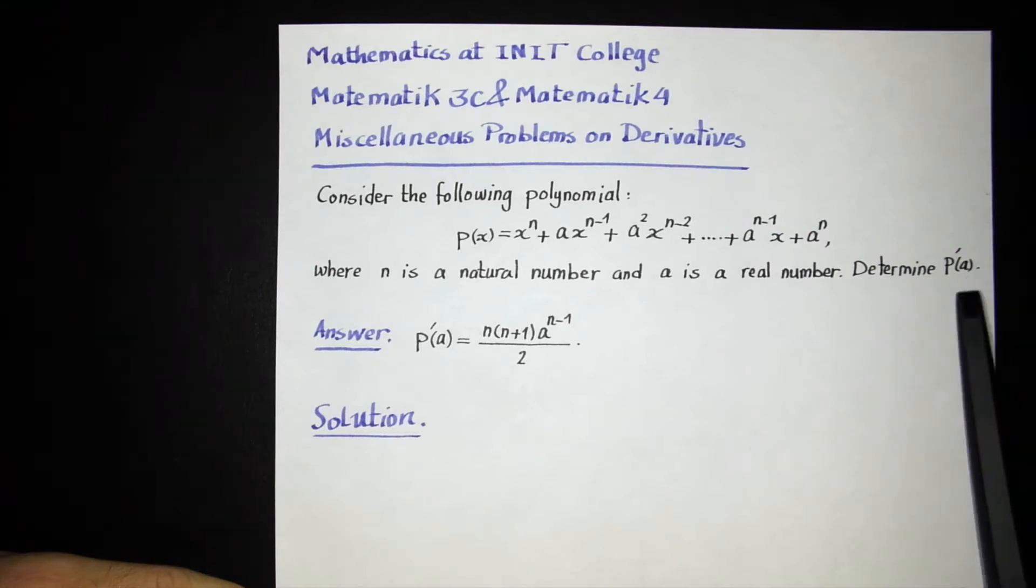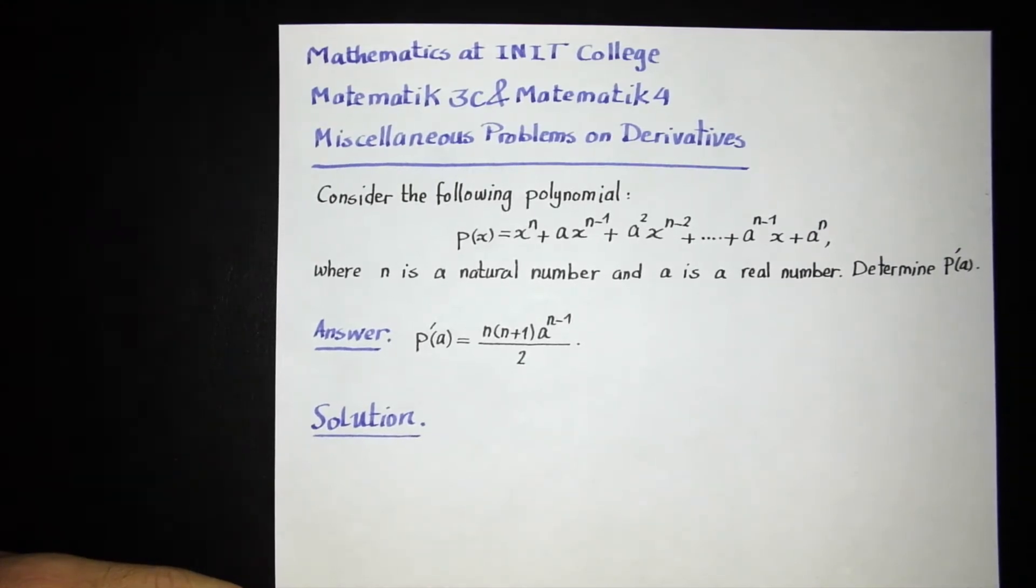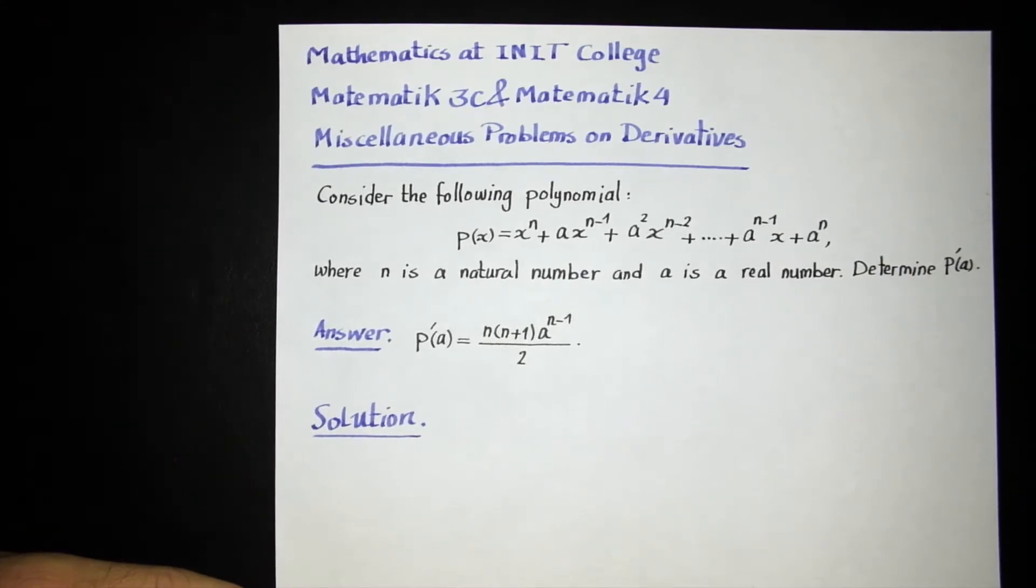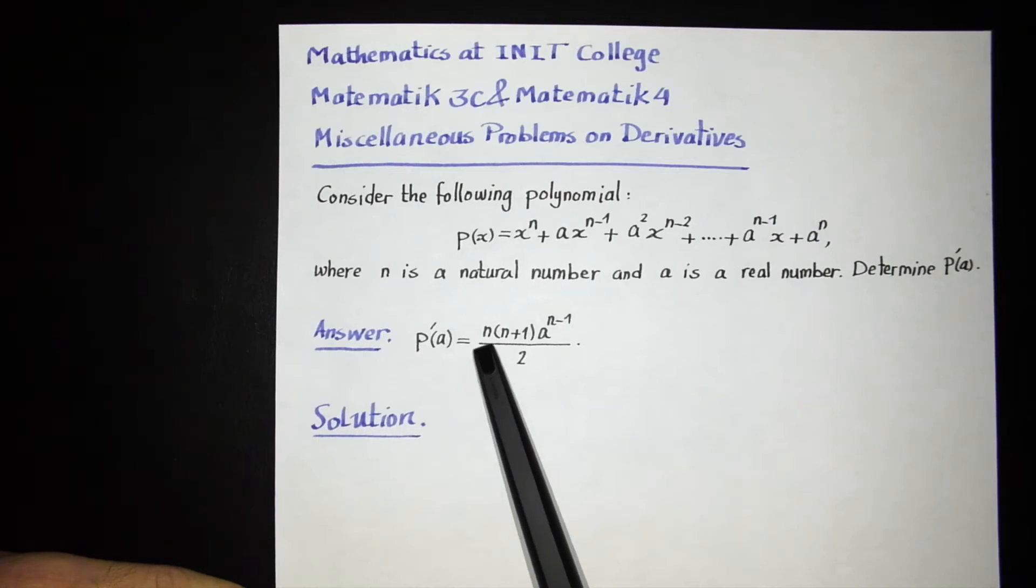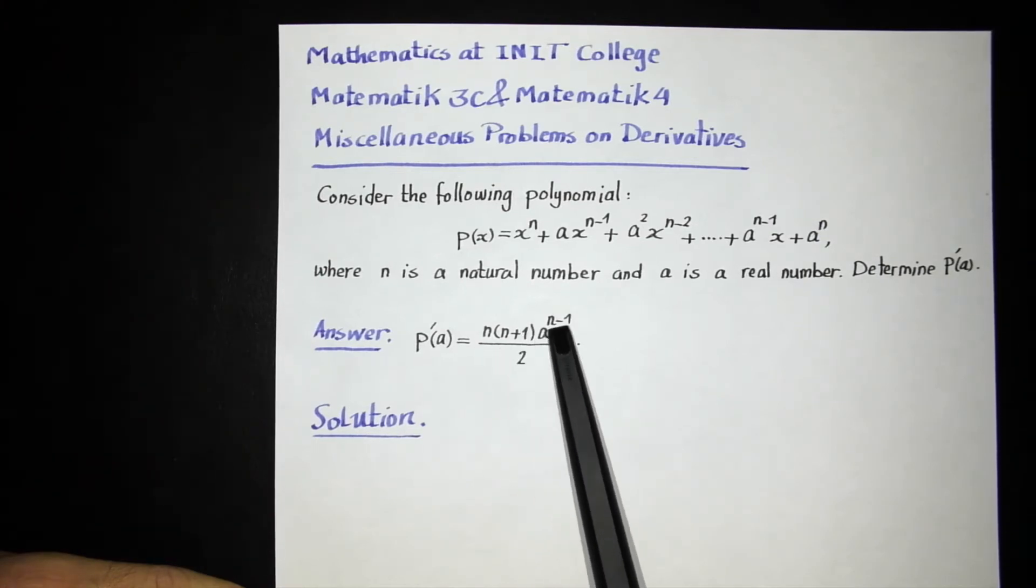Determine P prime of a. I recommend you pause the video at this point, try it yourself first and then come back. If you do everything correctly, the final answer you get would be P'(a) equals n times (n+1) times a to the n minus 1 divided by 2.